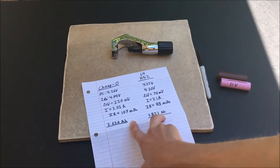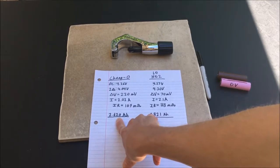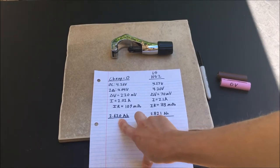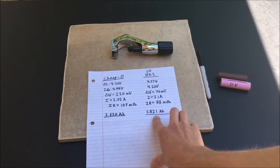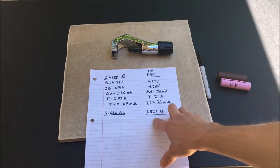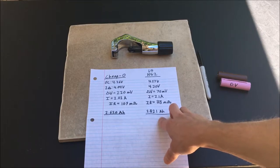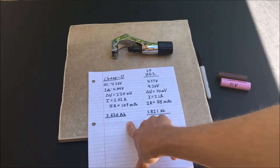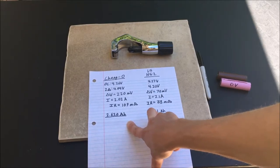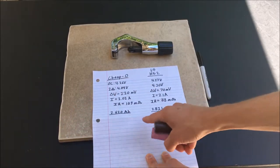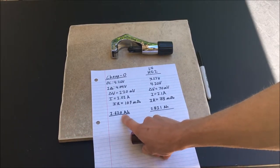Surprisingly, the capacity overall at a very low rate of discharge was very comparable between the two. The cheap cell came in at 2.62 amp hours and the expensive rated 3000 milliamp hour cell came in at just under 3000 at 2.821 amp hours. This was very surprising to me because the actual range was so vastly different between these. I would have thought I would see more like a thousand milliamp hours here.